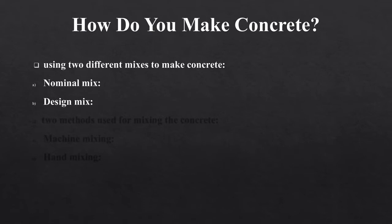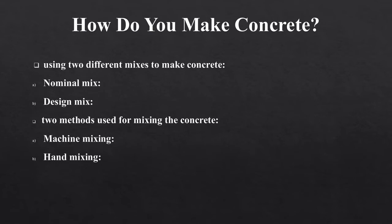Along with these mix proportions, there are also two methods used for mixing concrete: machine mixing and hand mixing. For machine mixing, ingredients are placed into a machine and then mixed. For hand mixing, the ingredients are placed on a flat surface, then workers add water and mix the cement using special tools designed for the task. The kind of mixing you use depends on the quality and quantity of concrete you want.